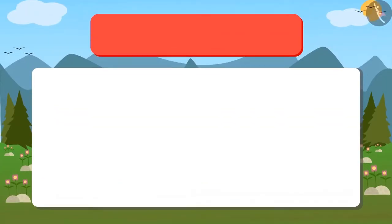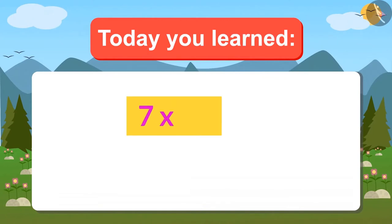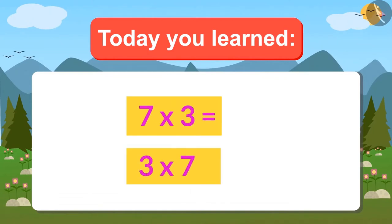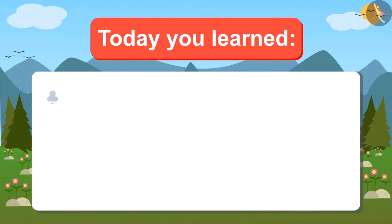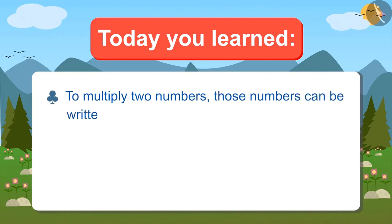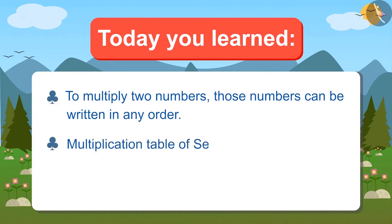Today you learned that whether you multiply 7 by 3 or 3 by 7, the answer will be 21. That means when two numbers have to be multiplied, they can be written in any order and the answer will be the same. We also learned the multiplication table of 7. Now write 7's multiplication table and memorize it by singing.